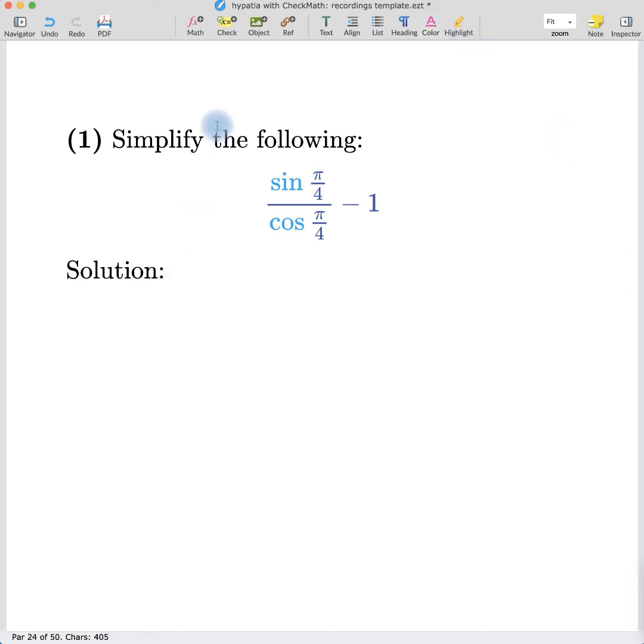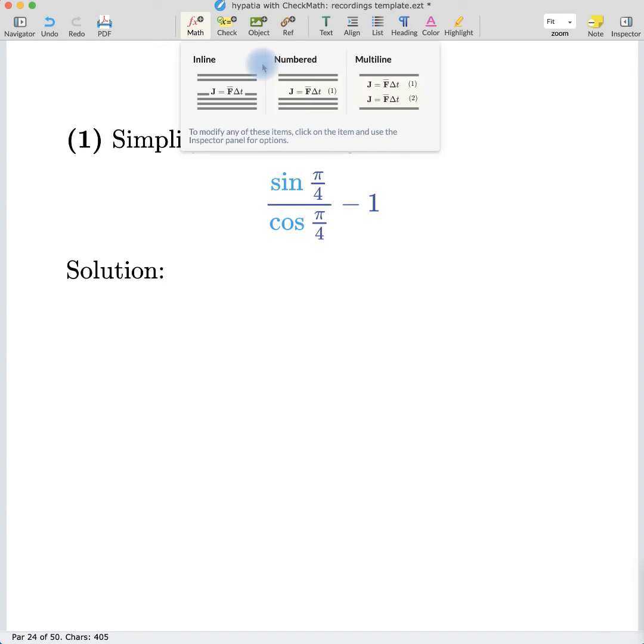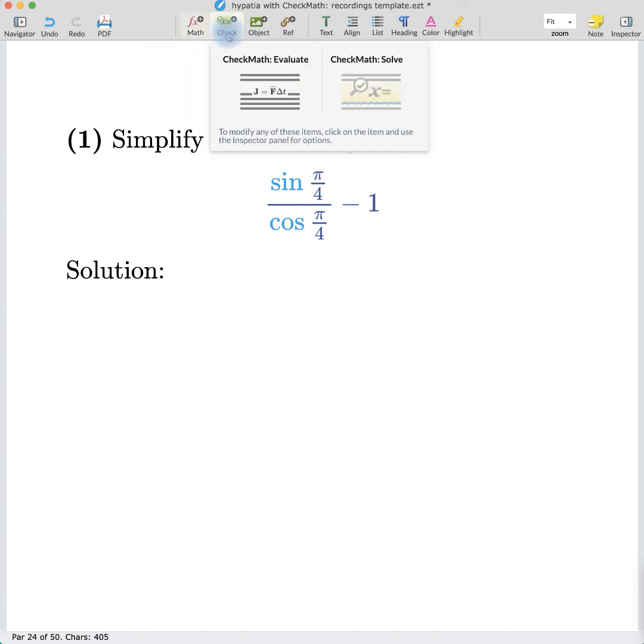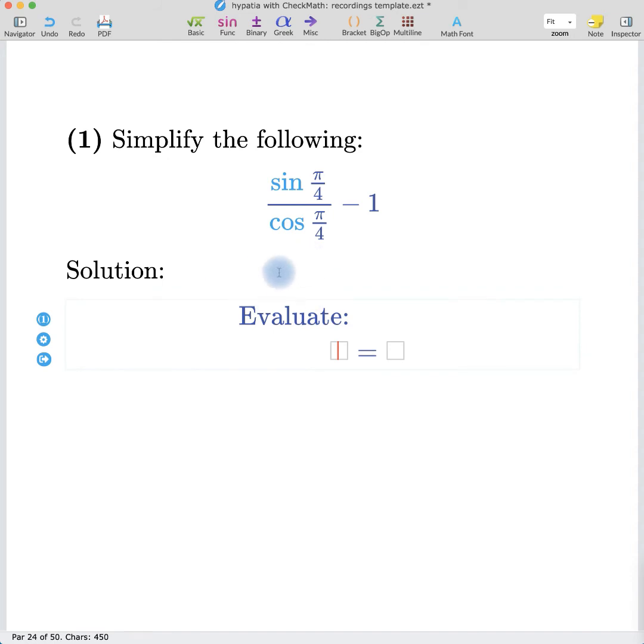And for this, instead of using the regular numbered math, let's go ahead and use check math to make sure that our answer is in fact correct. So we can open up a check math evaluate node. And I want to have this expression on the left side. So what I could do is just go back up here and simply drag to select, command or control C to copy, and paste it into the evaluate node if I want to do this quickly.